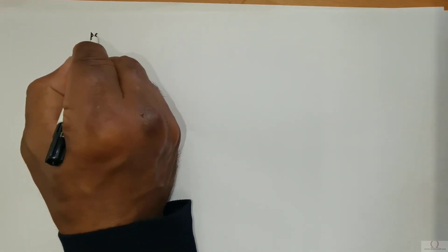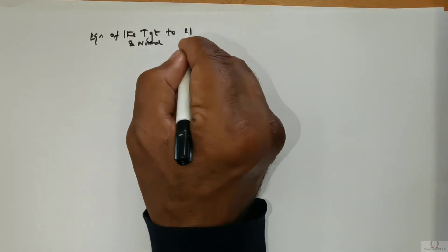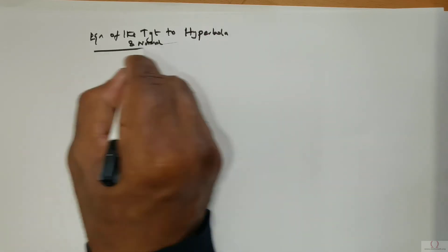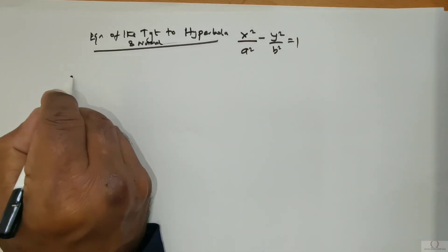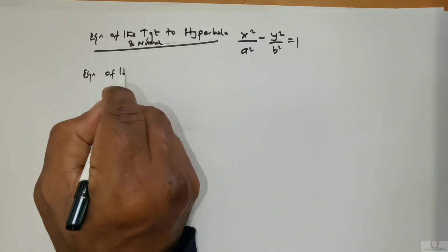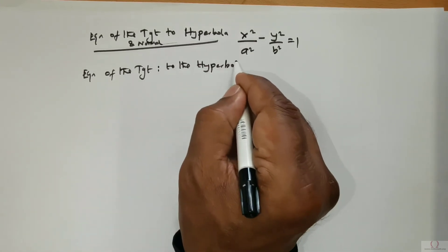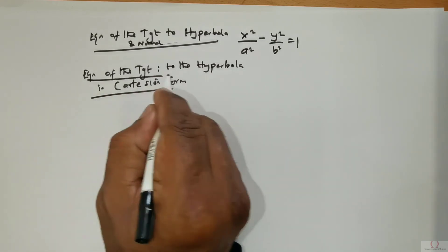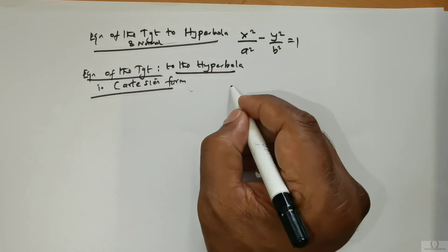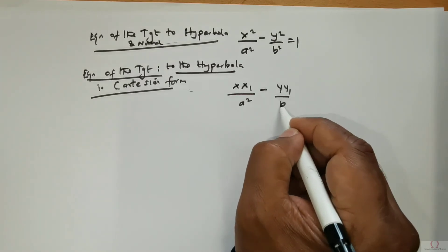Now we will move on to study the equation of the tangent and normal to the hyperbola. The standard equation of the hyperbola is x squared over a squared, negative y squared over b squared is equal to 1. The equation of the tangent to the hyperbola in Cartesian form is x times x1 divided by a squared, negative y times y1 divided by b squared, is equal to 1.